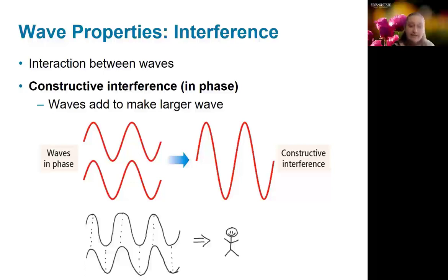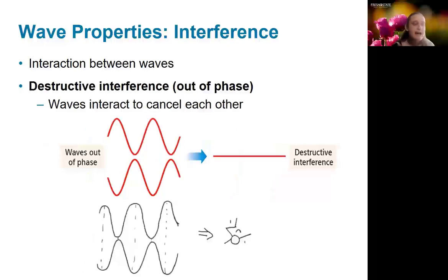They could also add destructively, where they're completely out of phase. And in that case, they would totally cancel each other out. Oftentimes, it'll be somewhere in the middle. So you'll get sort of a range of constructive and destructive interference, and that can lead to patterns, which we would call interference patterns.